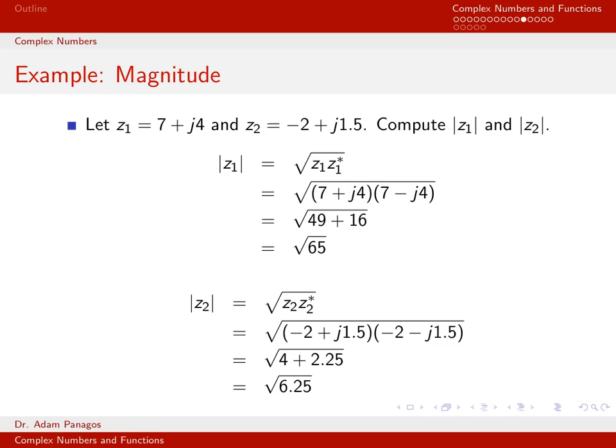To compute the product using FOIL: the first term gives 7 times 7 equals 49. The outer term is 7 times negative j4 giving negative 28j, and the inner term is j4 times 7 giving positive 28j — those cancel. The last term gives j squared times 16, and since j squared is negative 1, that becomes positive 16. So 49 plus 16 equals 65, and the magnitude of z1 is the square root of 65.